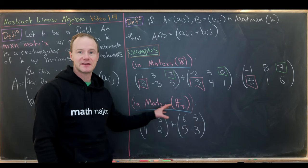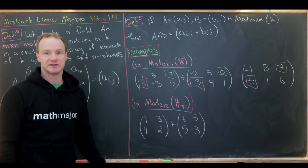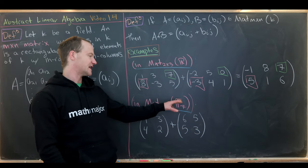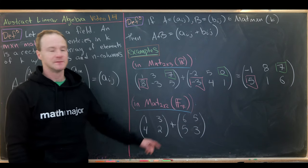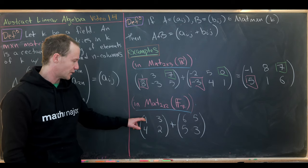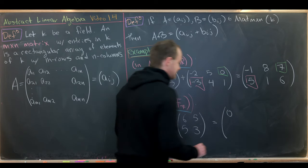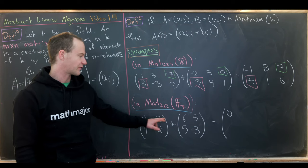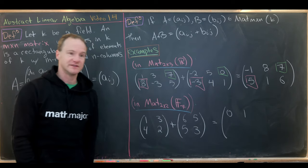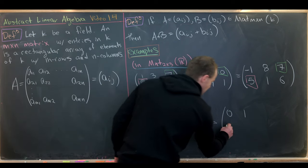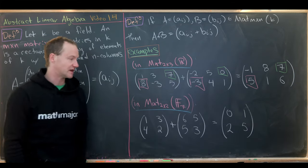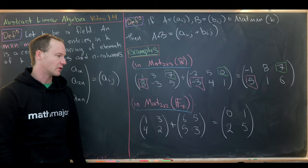Now let's look at 2 by 2 matrices — sometimes called square because they have the same number of rows and columns. Here we're working over a finite field: the integers modulo 7, called F7. So: 1 plus 6 equals 7, but in F7 that's 0; 3 plus 5 equals 8, which is 1 in F7; 4 plus 5 equals 9, which is 2 in F7; and 2 plus 3 is 5. So we're left with the matrix [0, 1, 2, 5].